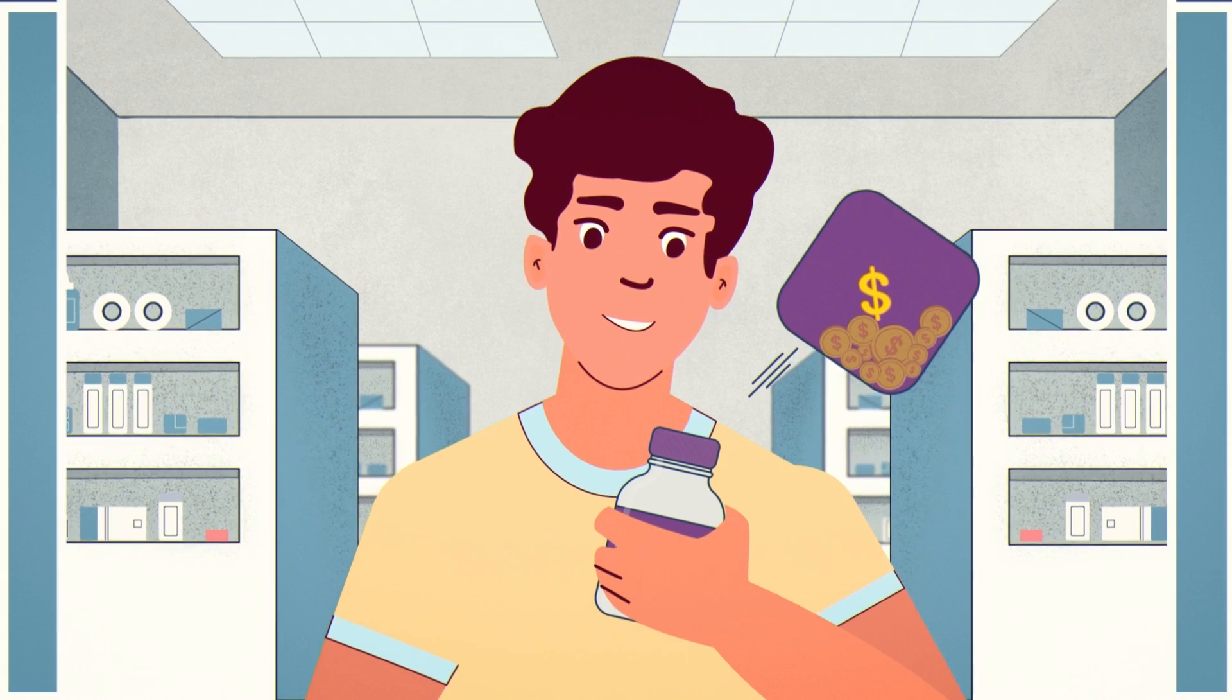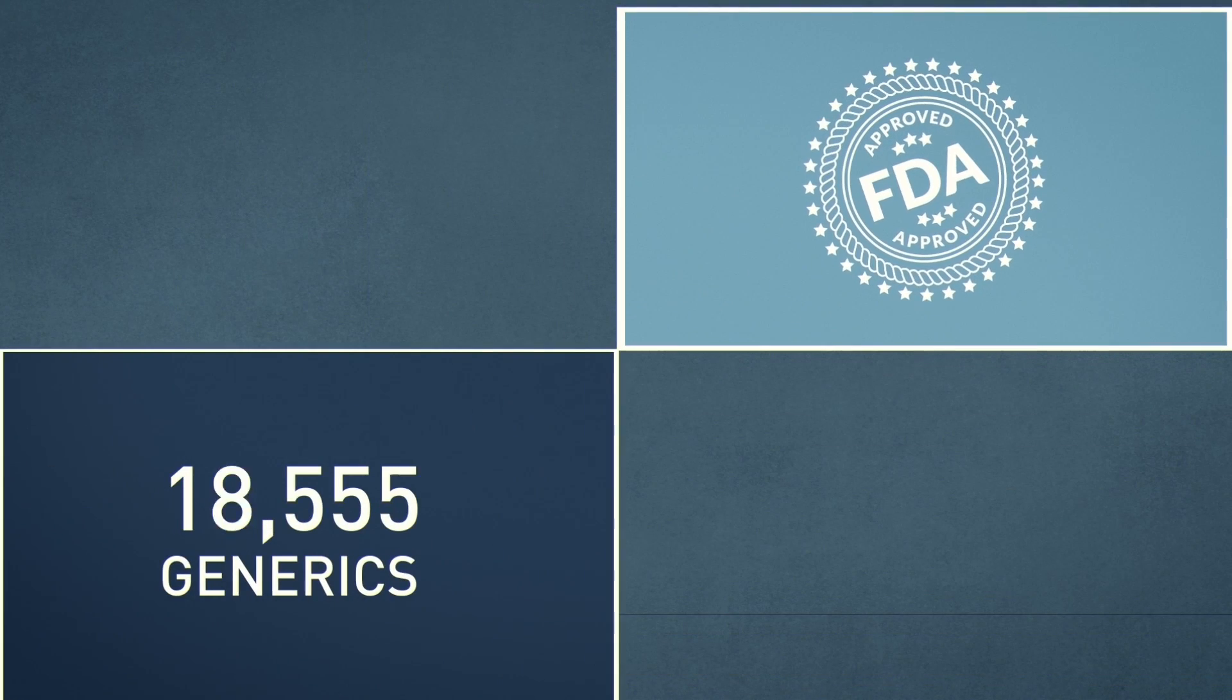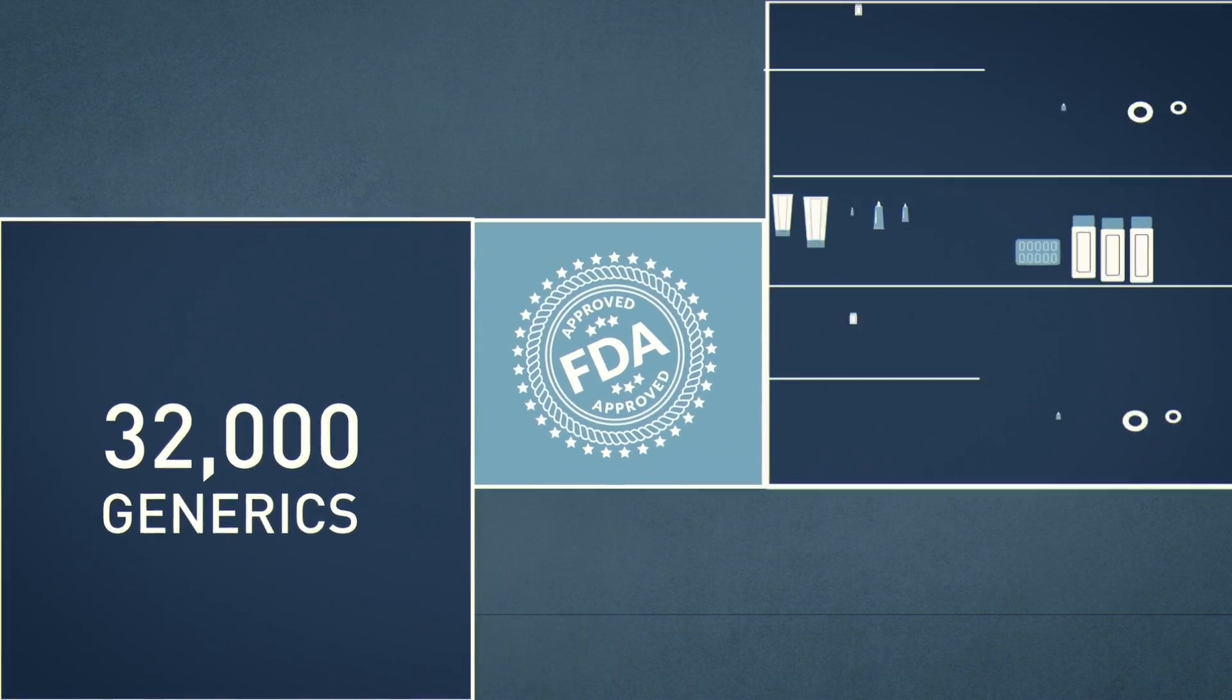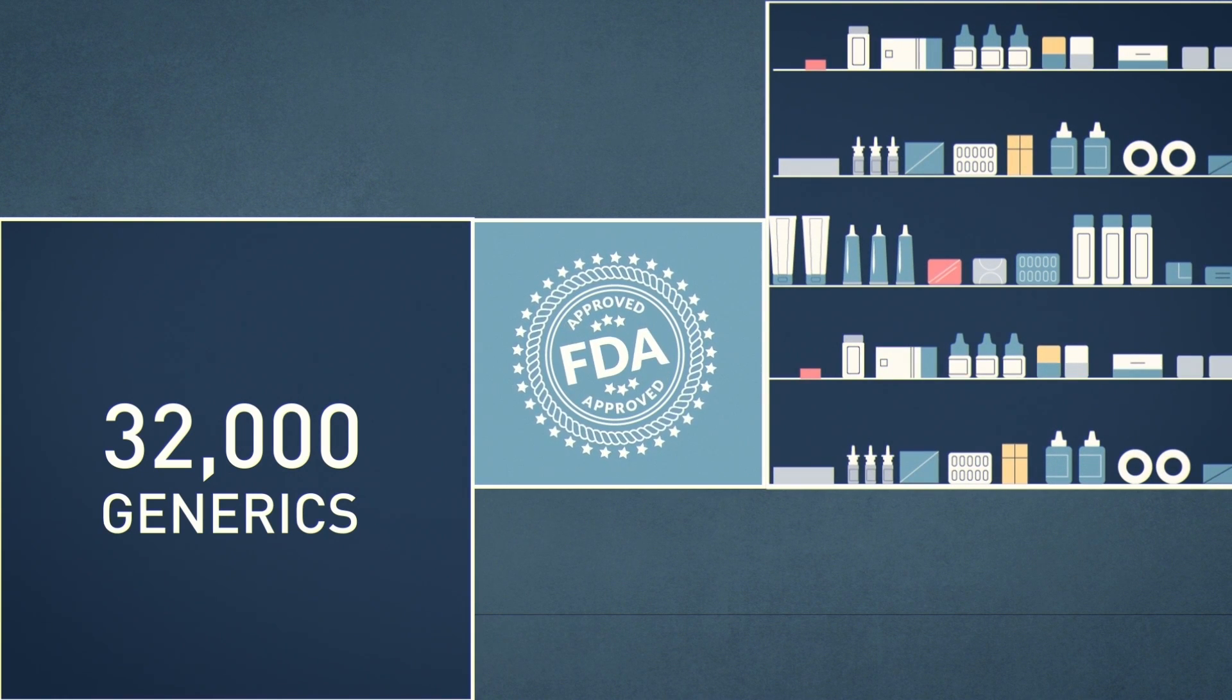In fact, the Food and Drug Administration has approved more than 32,000 generics. But how does that approval process work? Let's take a look.